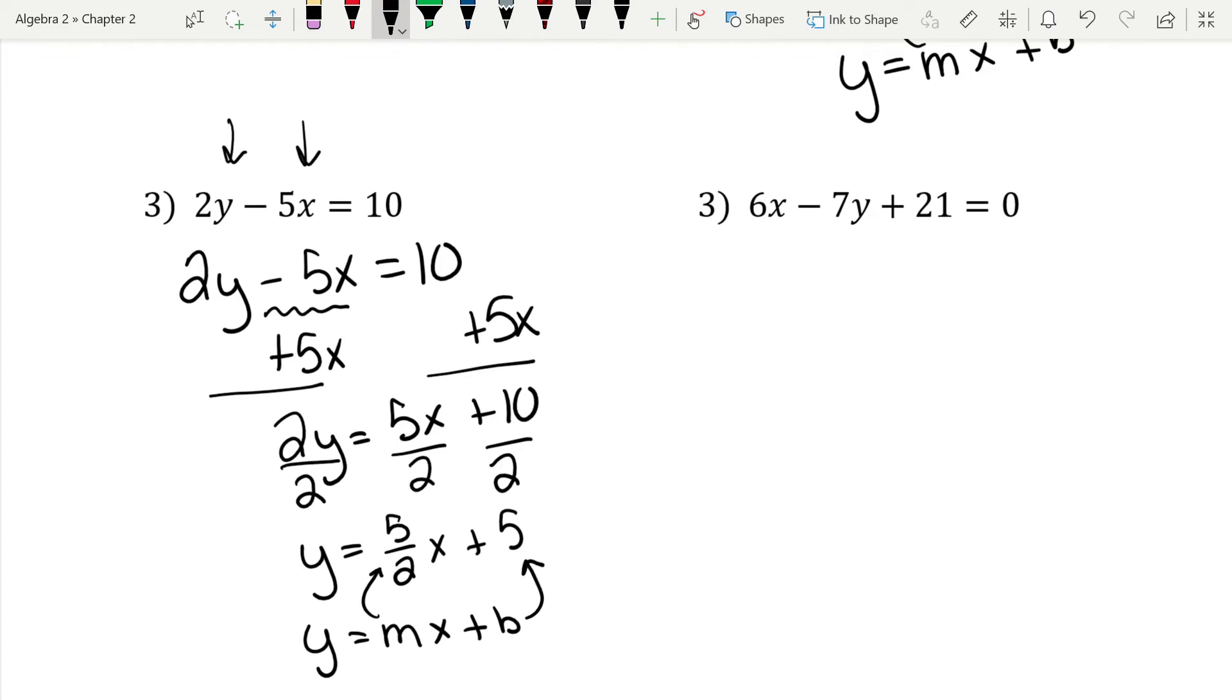Now let's look at the last one. This is really interesting. I'm going to rewrite it here. We have 6x minus 7y plus 21 equals 0. Now we're still going to do the same thing. We want y by itself on the left side. Now it doesn't matter if I get rid of the 6x first or the plus 21 first. So what I'm going to do is I'm going to get rid of this guy. So the opposite of adding is subtracting. So I'm going to subtract 21 from both sides.